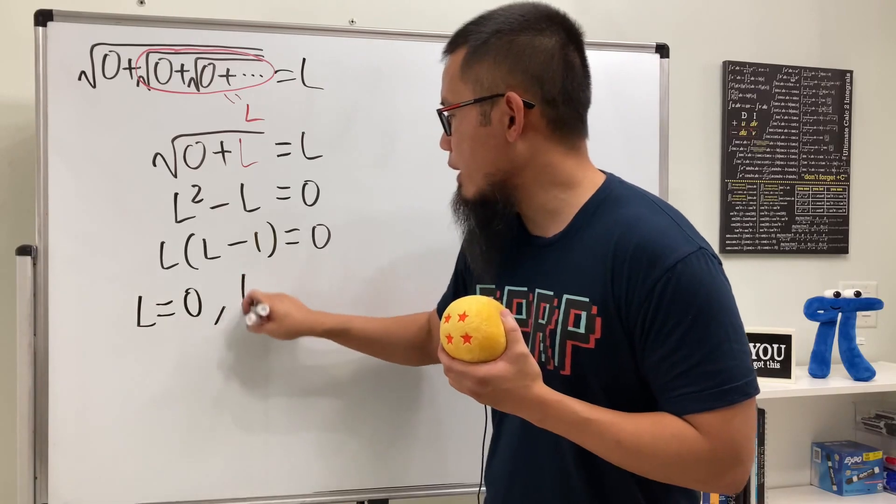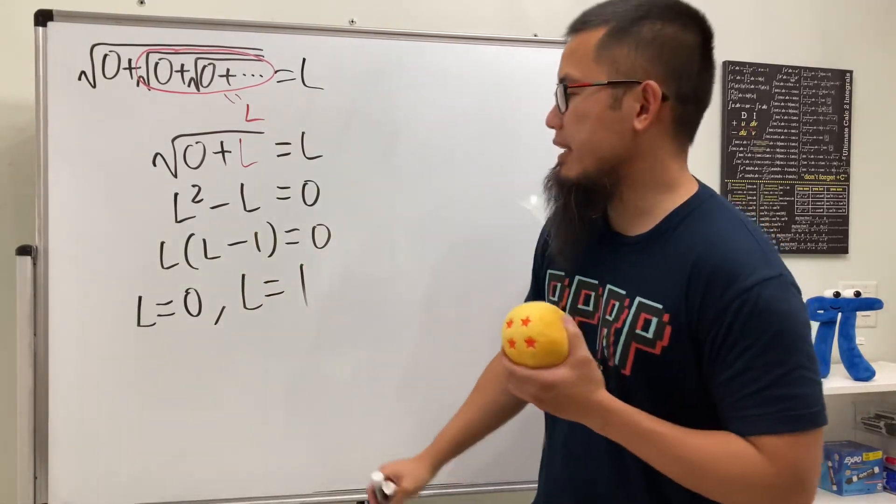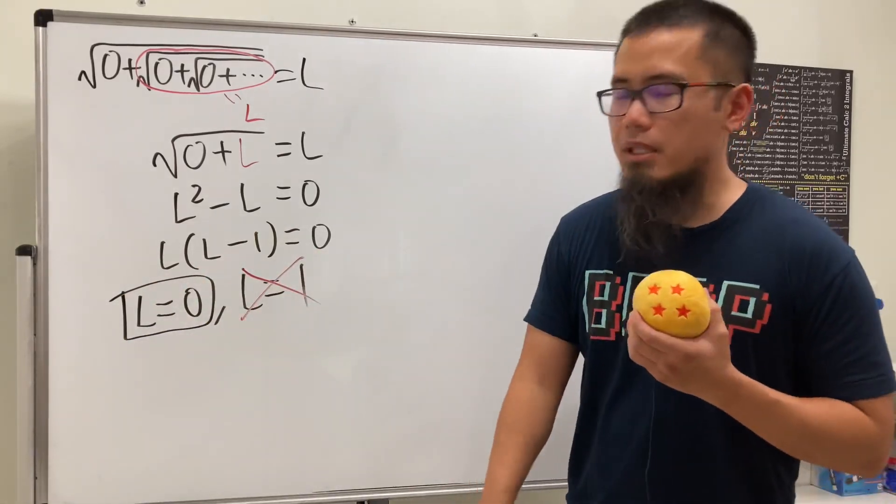As you can see right here, we can solve for L. L should be equal to zero and also equal to one. Right? No, we actually have just one answer, and the answer is equal to zero. You have to rule out the one, and the reason is because when we have square roots, the output of it has to be just one answer.